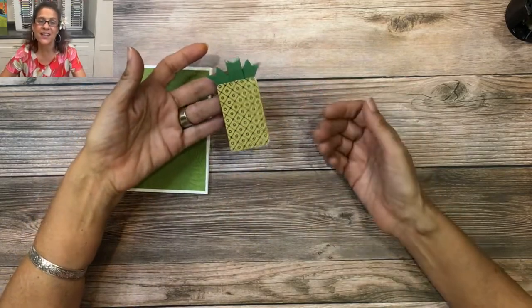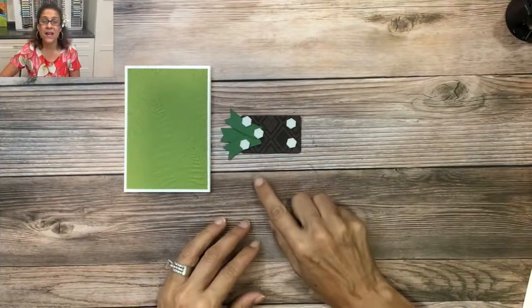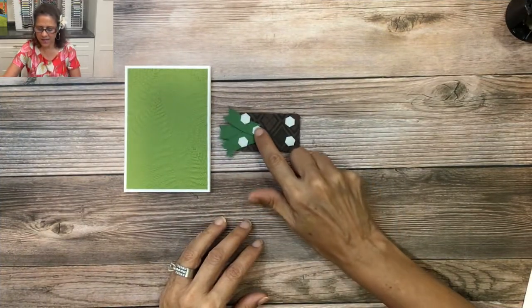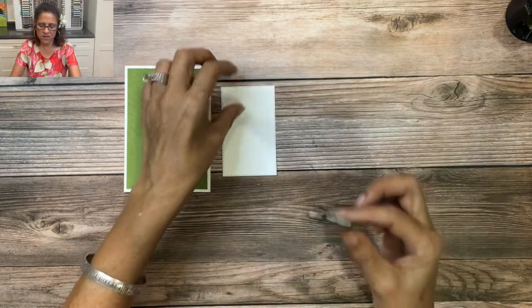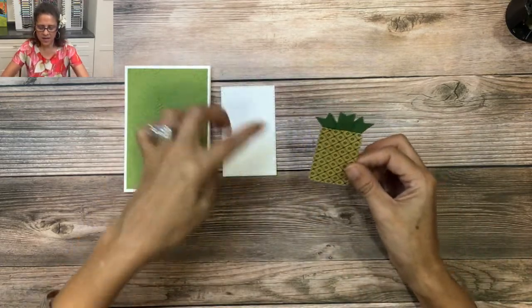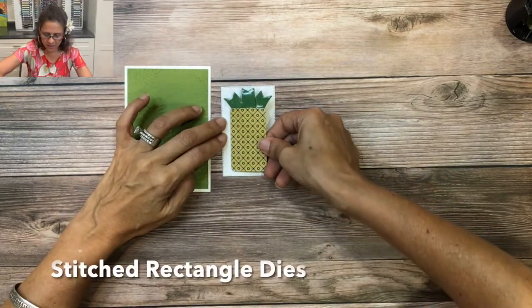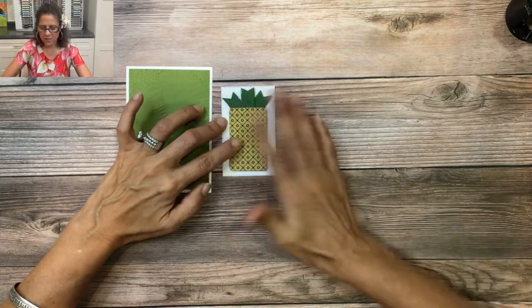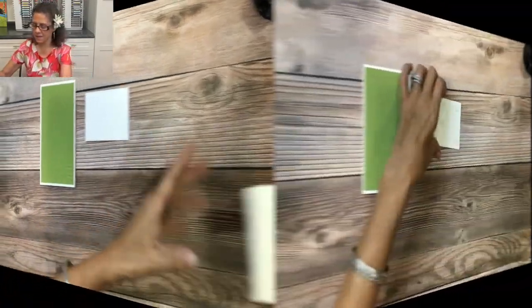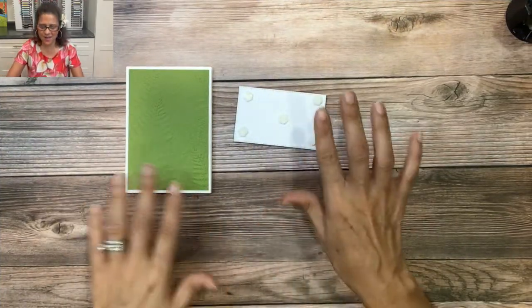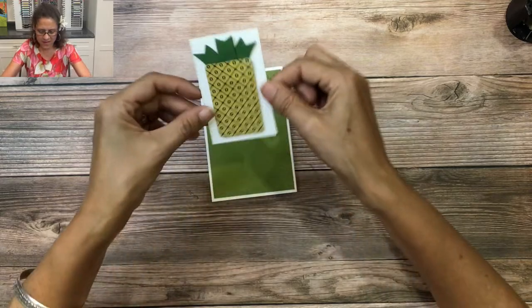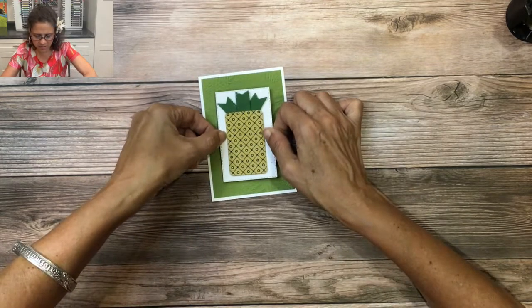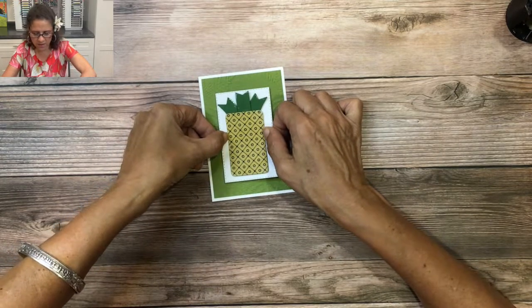Let's flip this over and add some dimensionals. So I've added five dimensionals. I've taken off the backing, and then I'm going to adhere this to a stitched rectangle die piece. I die cut that out of basic white cardstock, so I'm just going to place this right here. Then I'm going to turn this over, and I'm going to add dimensionals to this layer. I got five more dimensionals on there. They're all peeled and ready to go, and then our pineapple is going to get glued right here to the center of the card.